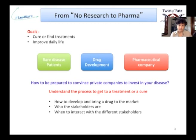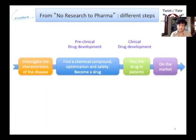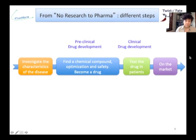The road to a drug on the market is often represented by a horizontal flow chart, starting from investigation to characterize the disease. Then molecules — also called chemical compounds — are tested for the disease, undergo modification for optimization and safety, and become a potential drug. These different steps are called the pre-clinical development. When the optimized chemical compound fulfills the requirements to be tested in humans, the clinical phases are performed before going to the market.